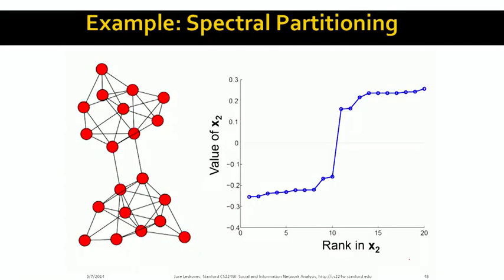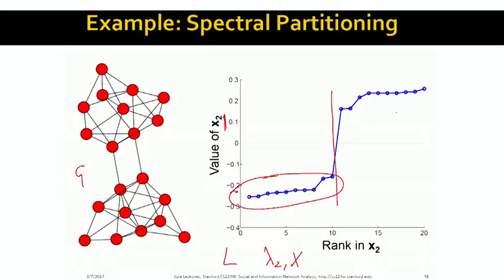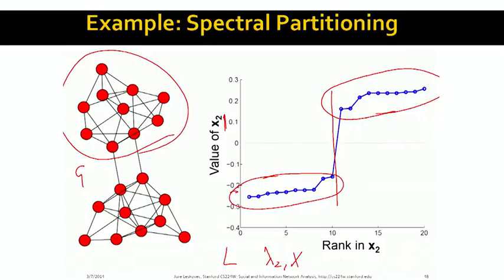For a more interesting example, here I have a graph G on the left that visibly has two clusters. I computed the graph Laplacian, then computed lambda 2 and the corresponding eigenvector X. When I sort the eigenvector X2 by its entries, you can see very nicely that there is a set of components with a negative value and a set with a positive value. The entries of the eigenvector with a positive value correspond to one cluster, and the remaining ones correspond to the second cluster.